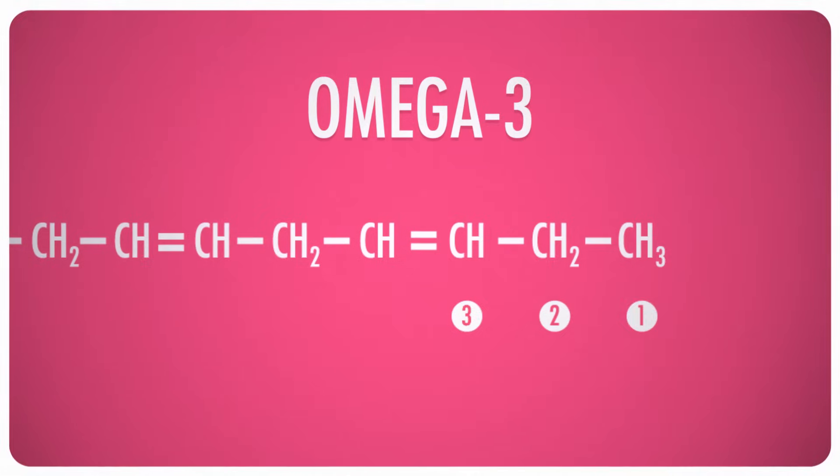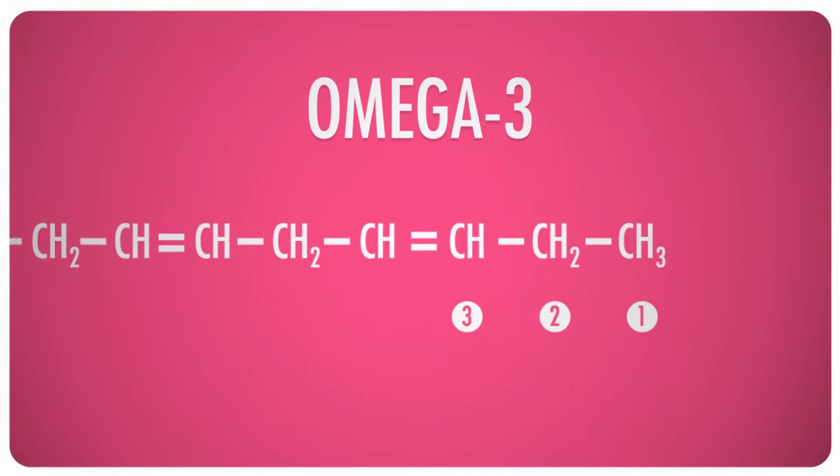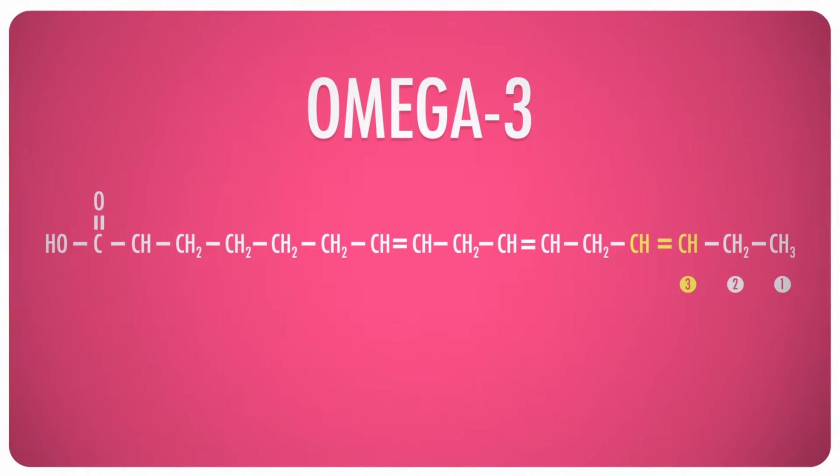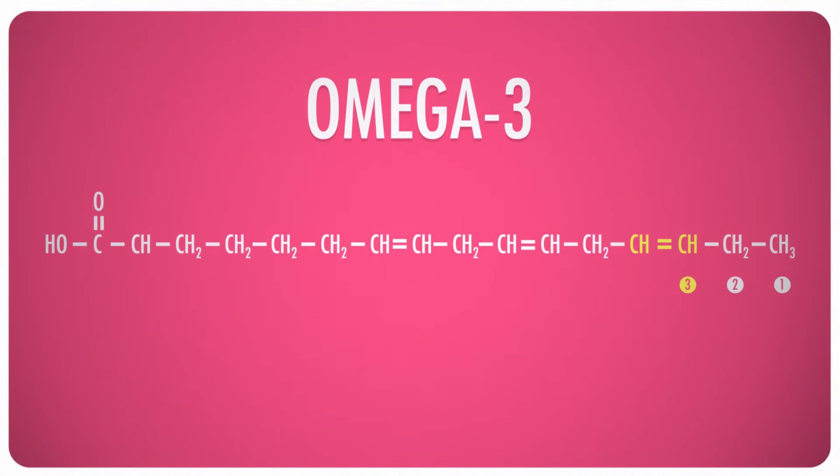Omega-3 refers to a specific location of the double bond — three carbons from the end, or omega, of the fatty acid chain. Your body is completely incapable of making this sort of fatty acid, and yet it needs them to survive. So you have to eat them.